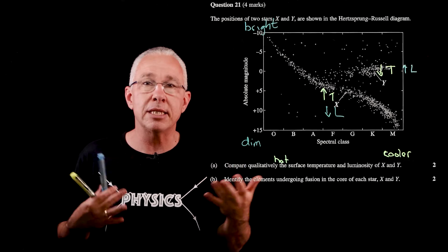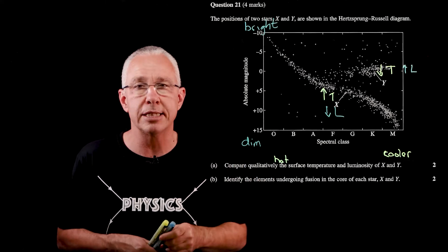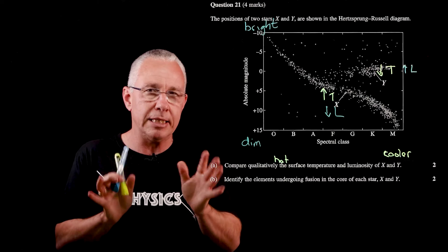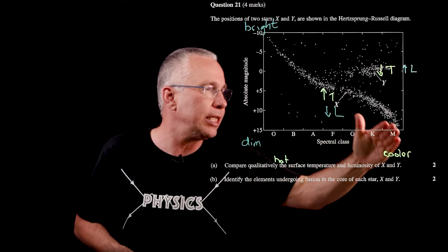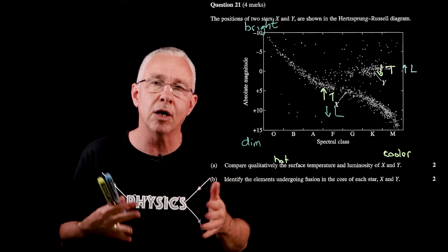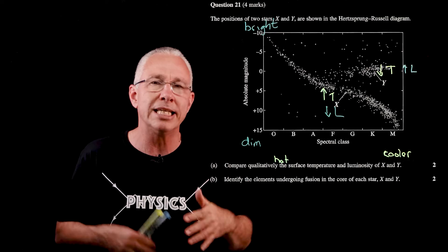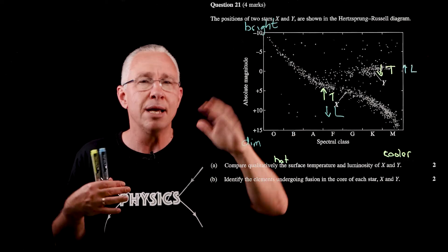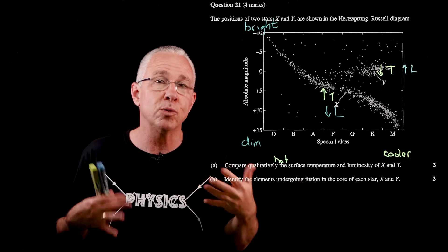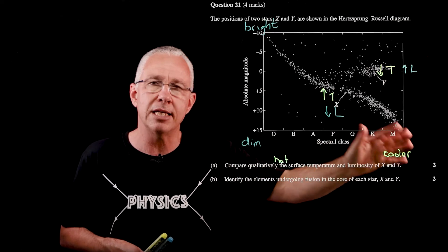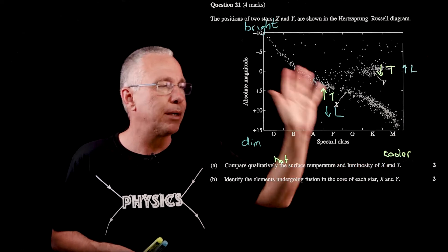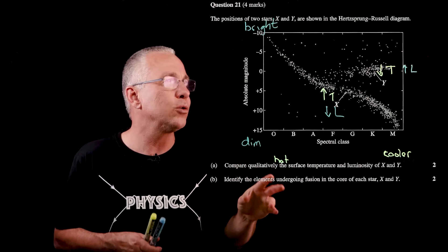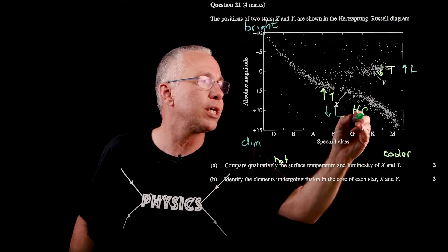This actually tells us more about the star — if Y is cooler but still brighter, it must also be much much larger. The next question asks what elements are undergoing fusion in these two stars. At HSC level this is a fairly simple answer. Stars on the main sequence, like star X, are undergoing hydrogen fusion. The main difference between main sequence stars is their size and therefore the rate of fusion — hotter, brighter stars fuse more quickly and have shorter lifespans, while smaller stars fuse hydrogen at a much lower rate.